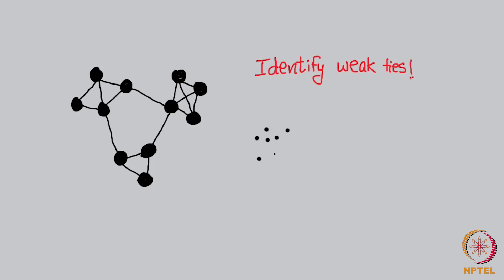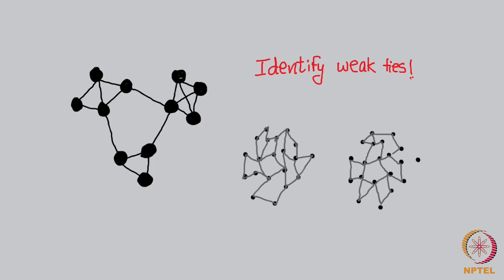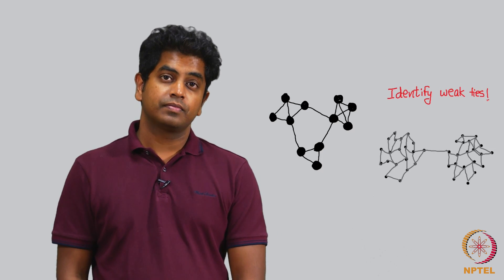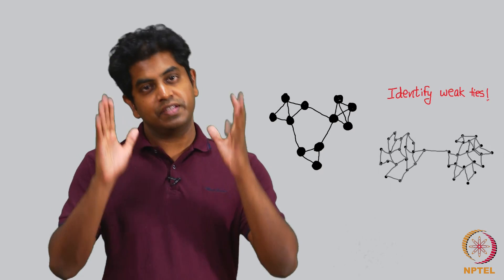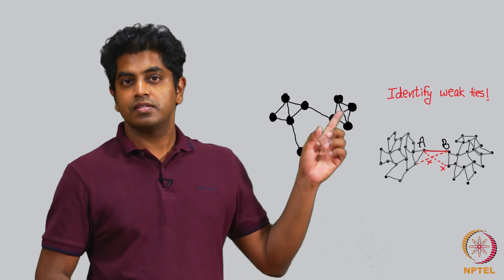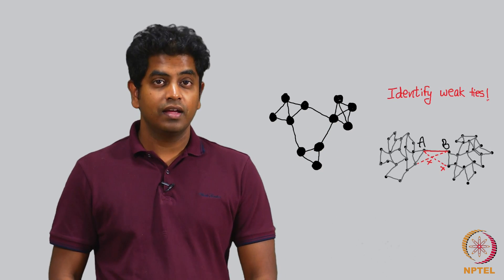Look at the underlying graph shown here. There are 25 nodes on this side and 25 nodes on that side, and there is only one friendship from someone on this side to someone on that side. There are 625 possible friendships between these two clusters — 25 this side, 25 that side — out of which only one friendship is happening here. Do you sense that this particular red colored edge is actually a weak tie? Isn't that obvious?